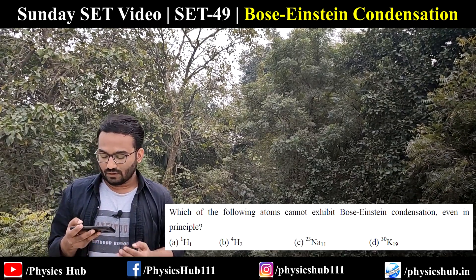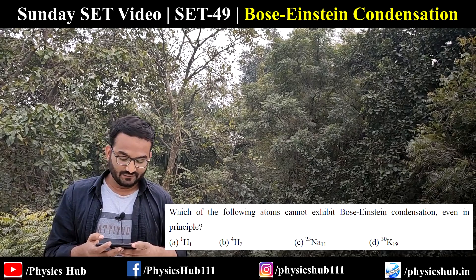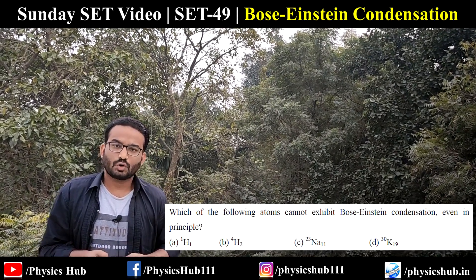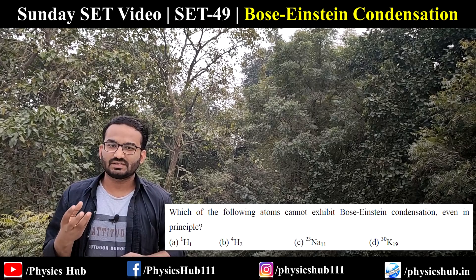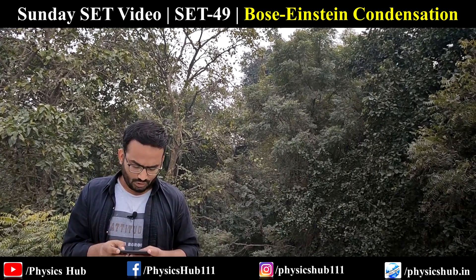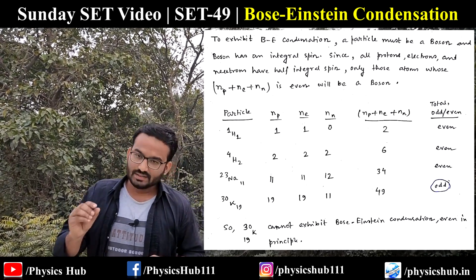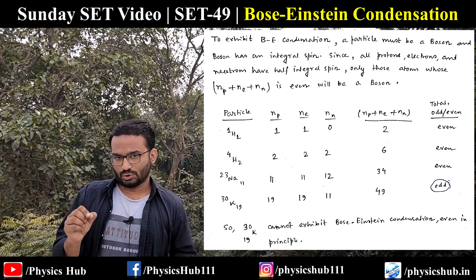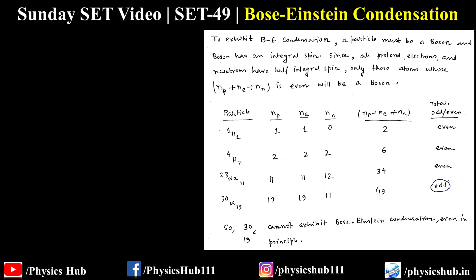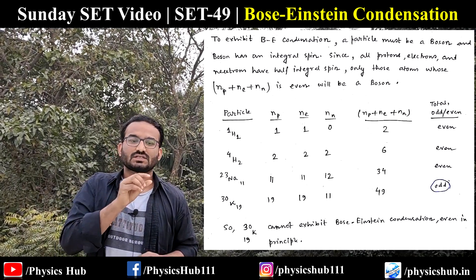Question two: which of the following atoms cannot exhibit Bose-Einstein condensation? This problem is very short but also very good. To exhibit Bose-Einstein condensation, the particle must be a boson, and a boson has integral spin — meaning the total number of electrons, protons, and neutrons must be even.